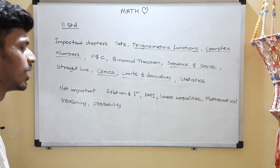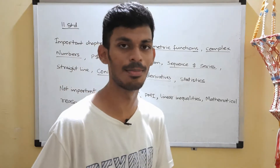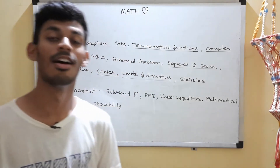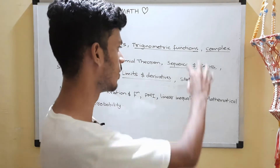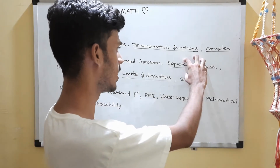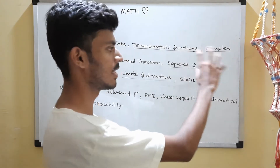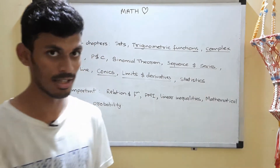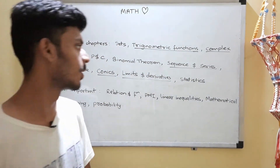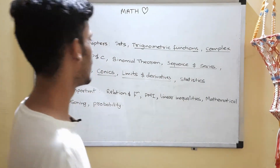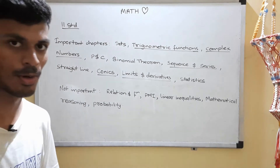We have Conic Sections — a little difficult, but a very important chapter for BITSAT. Conic Sections is ranked number two after Sequence and Series in the top five. Then we have Limits and Derivatives — very important chapters where you are often asked to compute limits of different forms.